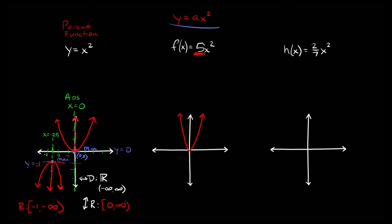The sign is really important too. A positive five opens upward, but if it was a negative five it's going to be flipped upside down. If the number is ever between zero and one, the parabola is going to get bigger, fatter, wider. And again, if the coefficient were negative it would just be flipped.